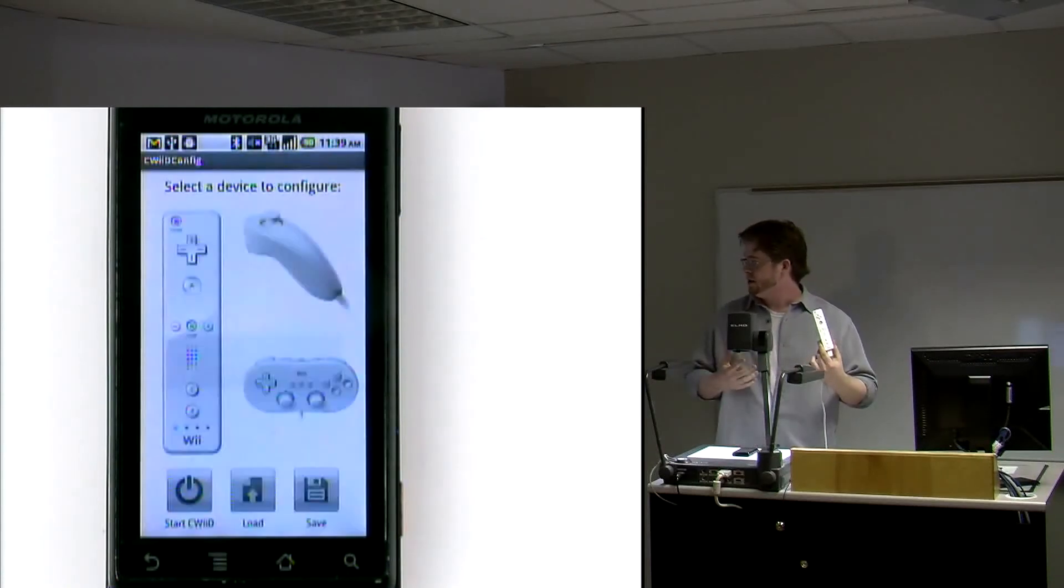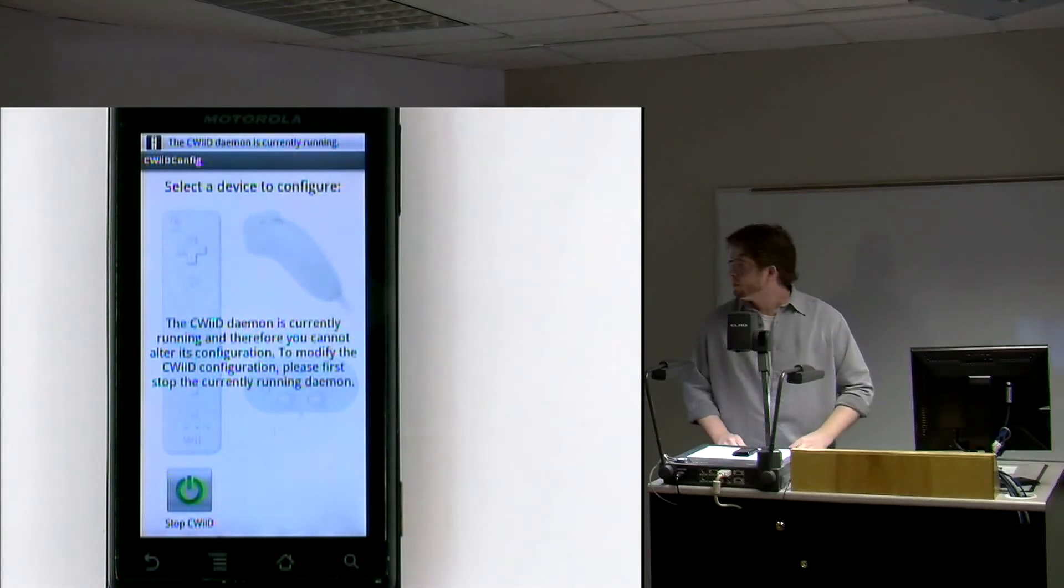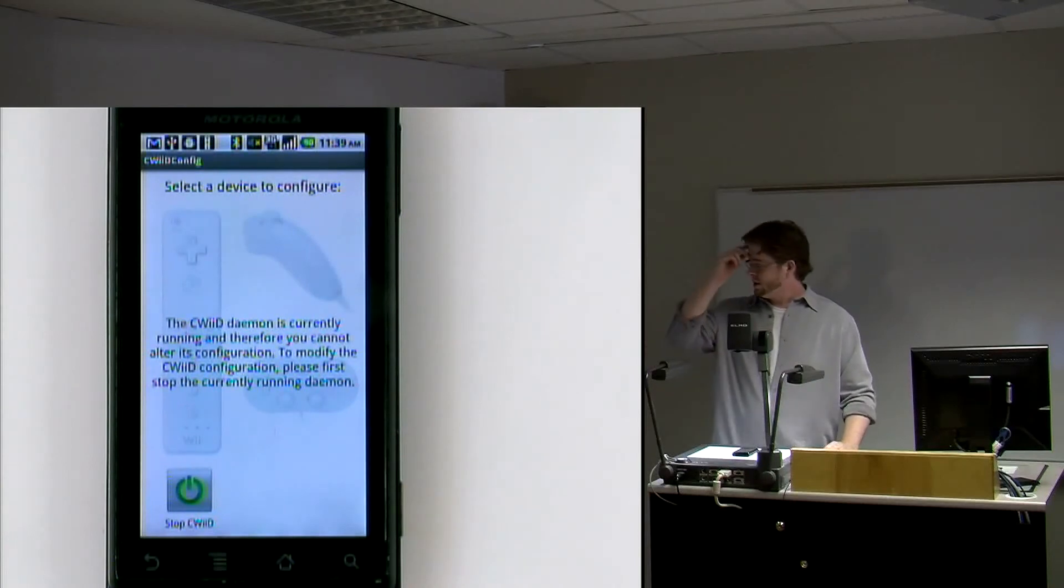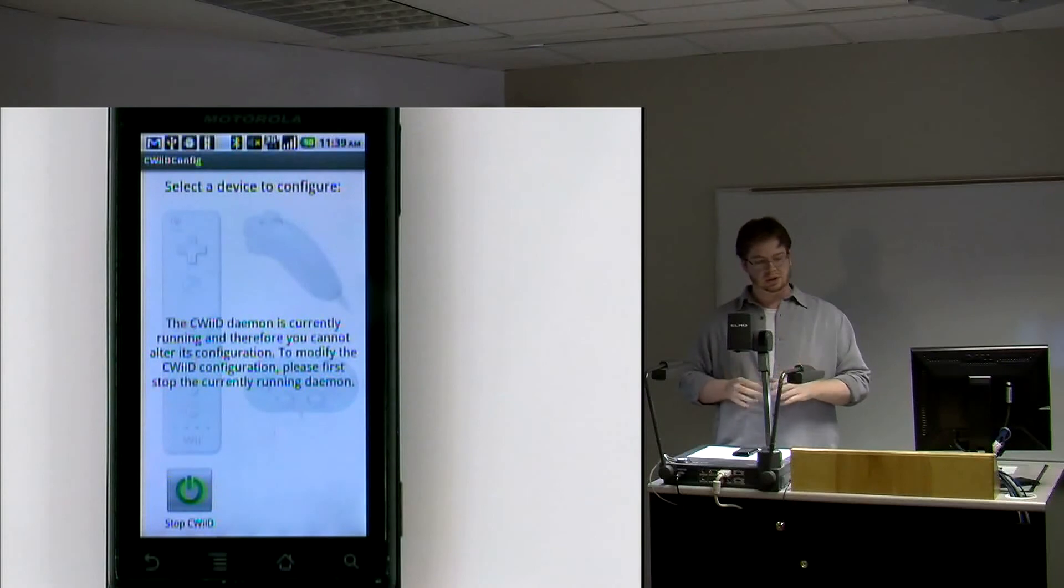And now it says your Wiimote is now connected. There'll be a little notification up at the top to tell you that the daemon is running and an icon will show up where you can then access this configuration page from anywhere in the operating system. We also, if you notice, we make sure that all of the various configuration options are grayed out and there's a notice informing them that because the daemon is running and it's already loaded a configuration, you're not able to modify that configuration until you stop the daemon.